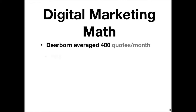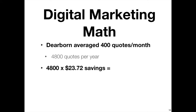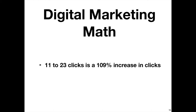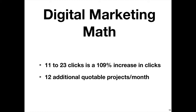Now here's where it really gets good. These are actual numbers from my previous company, Dearborn Crane. We were averaging about 400 quotes per month, or 4,800 per year. If you take the savings of $23.72 per inquiry times 4,800 inquiries, you get a savings of $113,856. But that's not all. In addition to the savings of $113,000, you now have 12 additional sales inquiries per month. Just for illustrative purposes, if you landed one in four quotes with an average of $50,000 per job landed, this would result in additional sales of $150,000 per month. Of course, your hit rate and average sale size would be different. And remember, this is just for one single test.